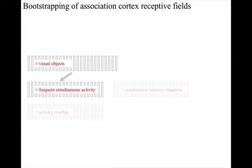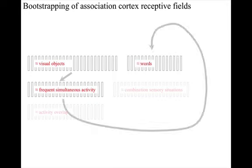Experience will then develop receptive fields corresponding with the appropriate groups of visual objects columns. And those columns also have a genetic bias in favour of output connectivity to the discriminates words area.